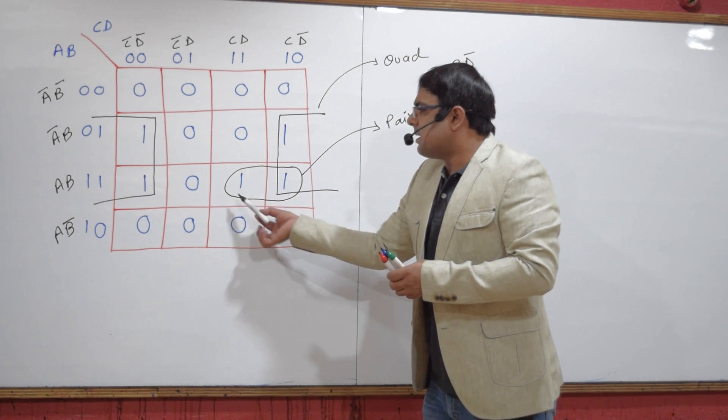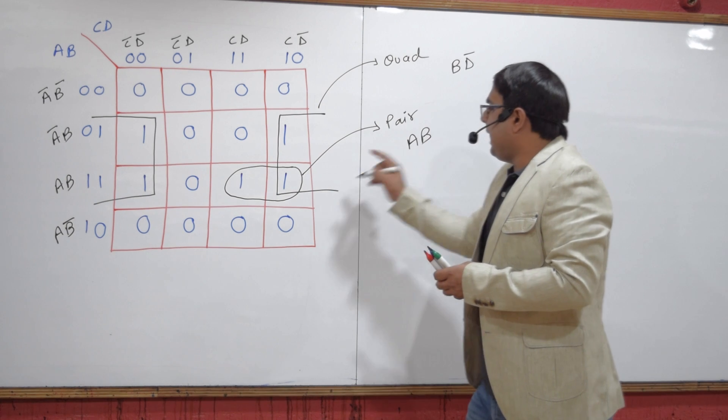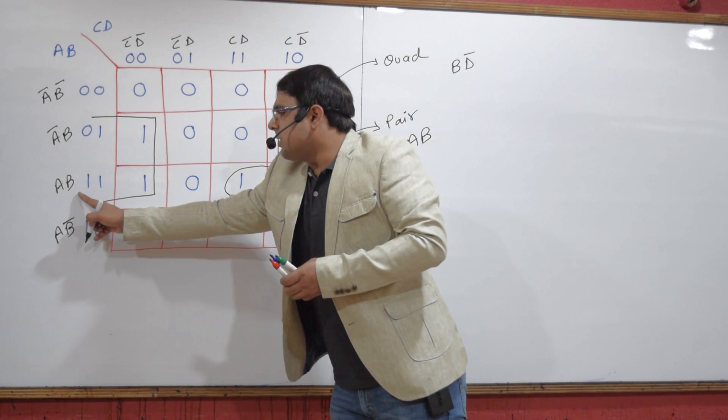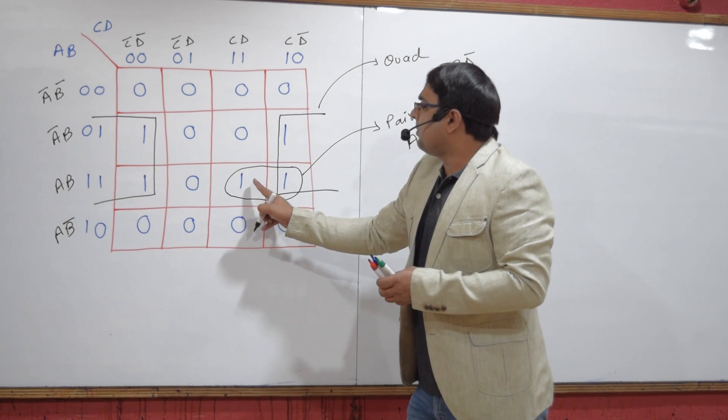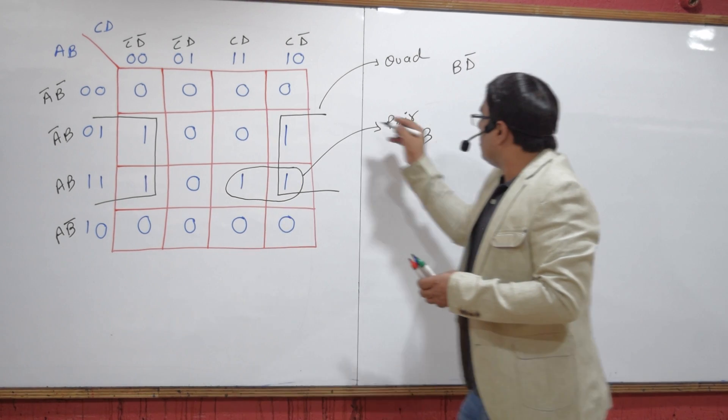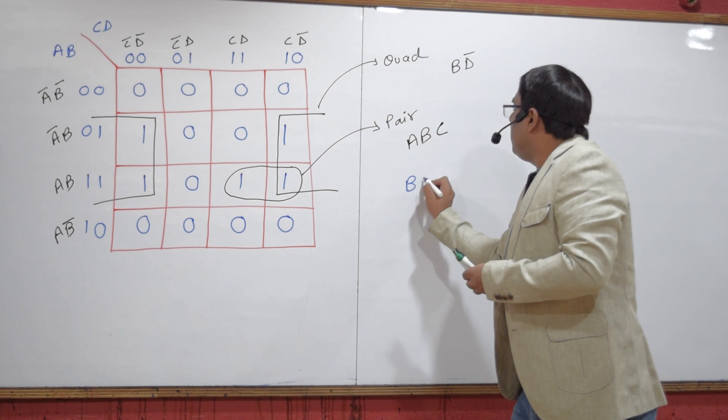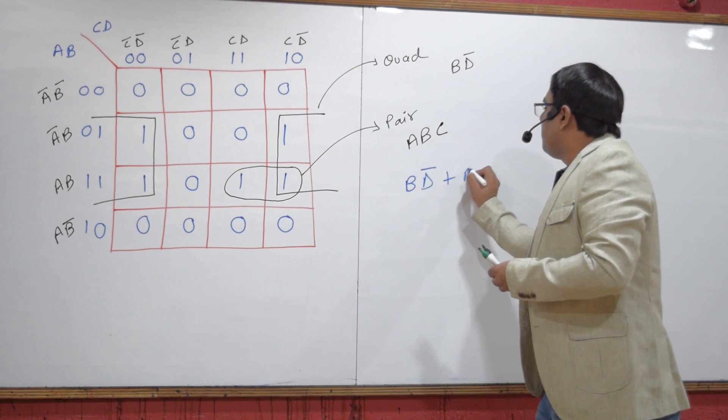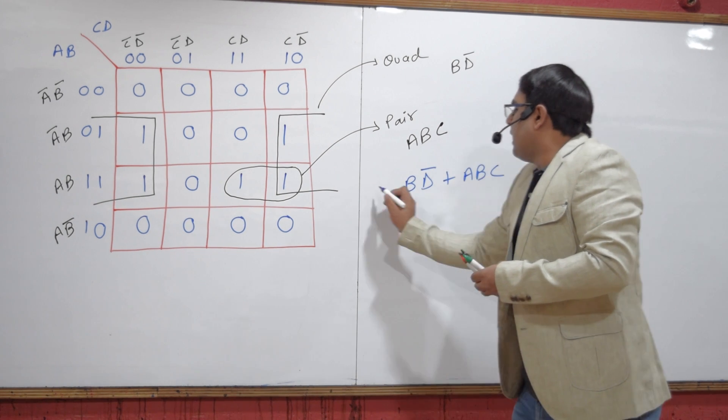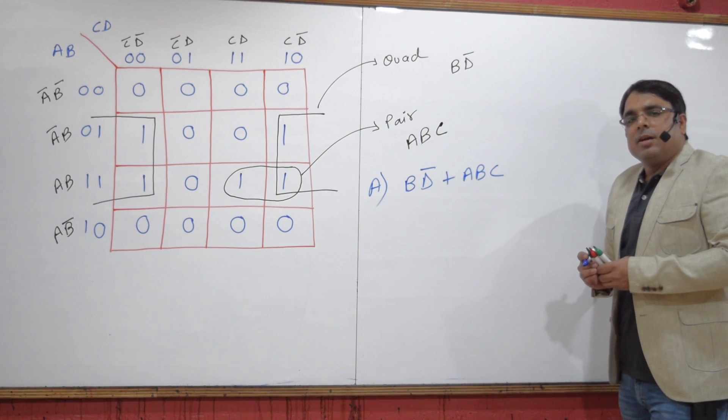This is again very simple. AB is constant here. You can see for both of these min terms, C is constant. So ABC. Your final answer should be B D complement plus ABC, and that was option A. So this will be your answer. Okay friends, thank you.